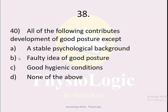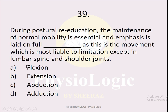MCQ number 38: All of the following contribute to the development of good posture EXCEPT — option A a stable psychological background, option B faulty idea of good posture, option C good hygienic conditions, option D none of the above. The correct option is option B, faulty idea of good posture. Options A and C contribute to good posture, but if a person has a faulty idea of good posture — for example, thinking excessively forward shoulders is correct — this does not contribute to good posture.